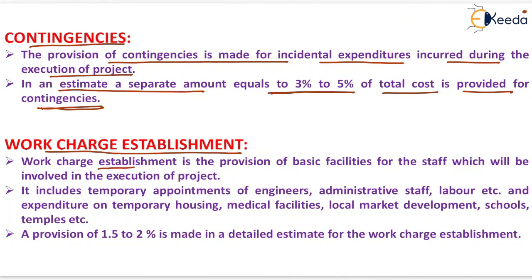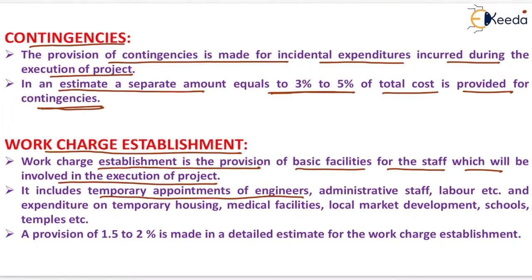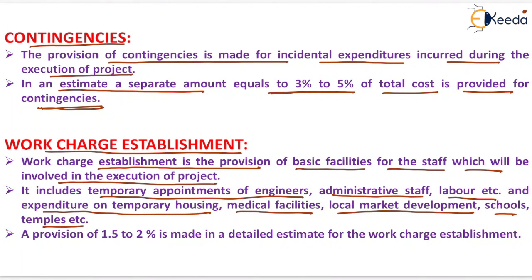Work charge establishment is the provision of basic facilities for staff involved in the execution of a project. It includes temporary appointments of engineers, administrative staff, labor, etc., and expenditure on temporary housing, medical facilities, local market development, schools, temples, etc. A provision of 1.5 to 2 percent is made in a detailed estimate for work charge establishment.